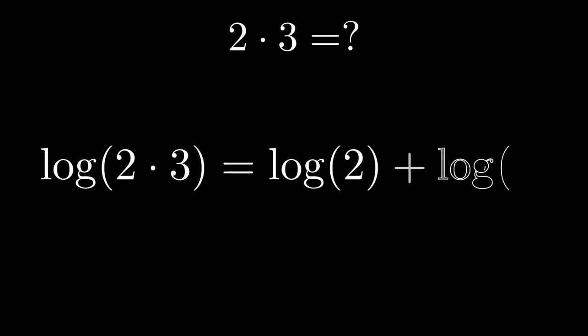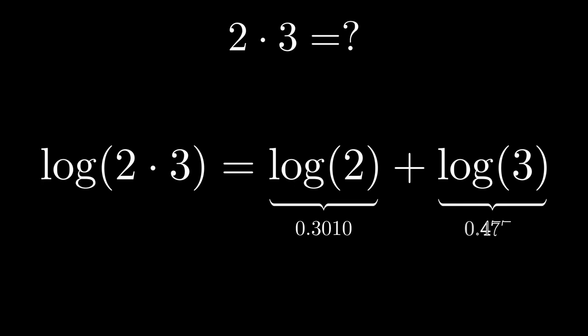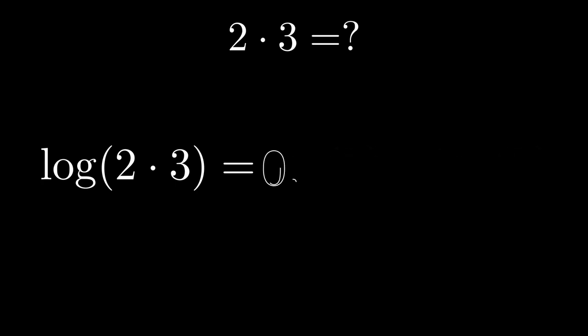Suppose we don't know what 2 times 3 is, but we have a table of logarithms and we remember the property for multiplication. This way, log of 2 times 3 equals log of 2 plus log of 3. This equals 0.3010 plus 0.4771. This adds to 0.7781. I used only four decimals.